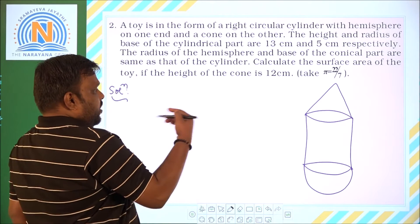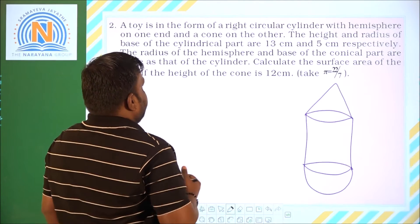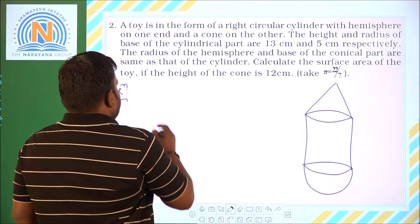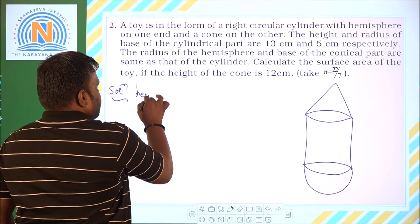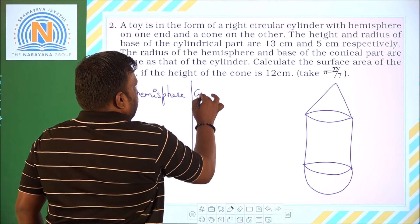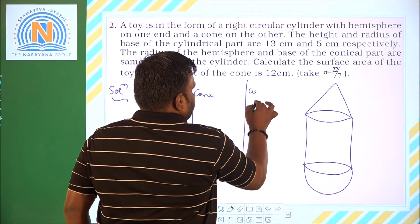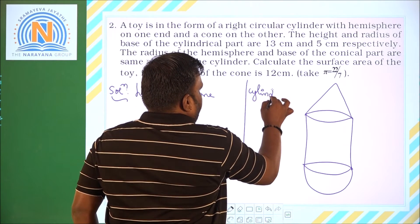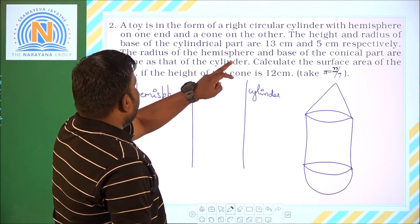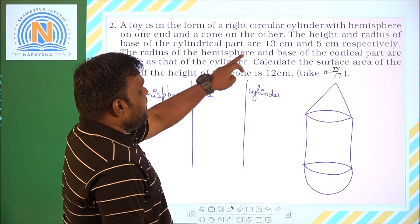So we are coming across three parts: hemisphere, cone, and cylinder. The height and the radius of the base of the cylindrical part are 13 centimeters and 5 centimeters respectively.